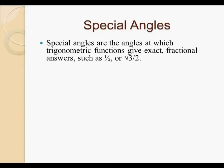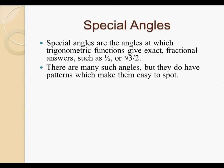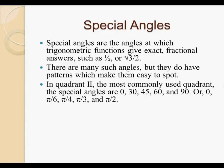Special angles. Special angles are the angles at which trigonometric functions give exact fractional answers, such as 1 half or root 3 over 2. There are many such angles, but they do have patterns which make them easy to spot. In quadrant 2, the most commonly used quadrant, special angles are 0, 30, 45, 60, and 90, or 0, pi by 6, pi by 4, pi by 3, and pi by 2.